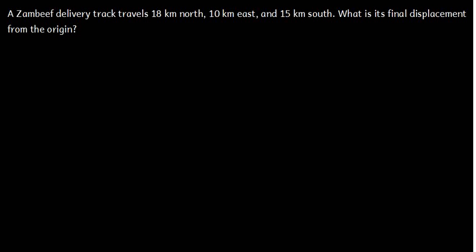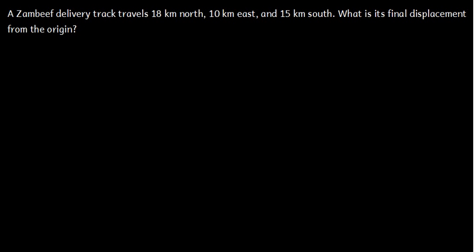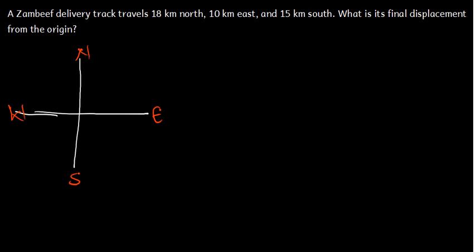You can first put this information in the x-y plane. When they say find the final displacement, it's the same as finding the resultant. Draw the x-y plane and note that north is up, south is down, east is right, west is left. This line toward north is 90 degrees, east is 0 degrees, west is 180 degrees, and south is 270 degrees. So we have 18 kilometers in the north direction.